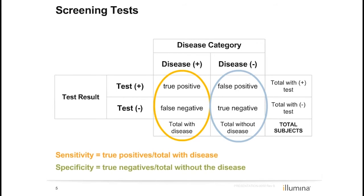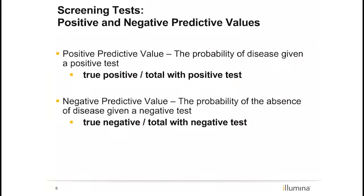To determine sensitivity, divide the number of true positives by true positives plus false negatives — the total number of individuals with the disease. To determine specificity, divide the number of true negatives by true negatives plus false positives — the total number of individuals without the disease.